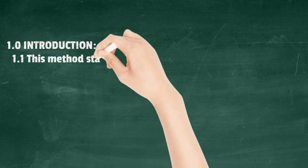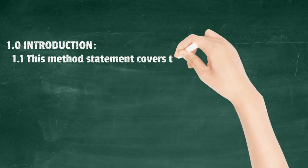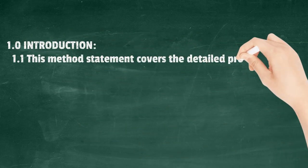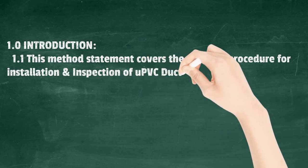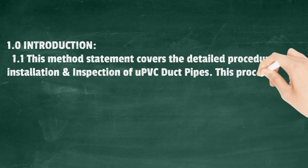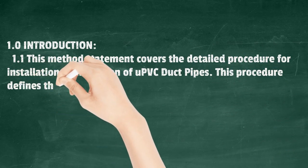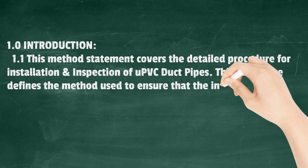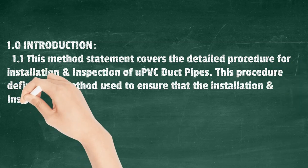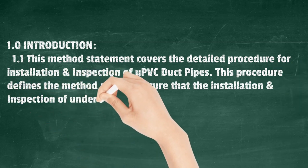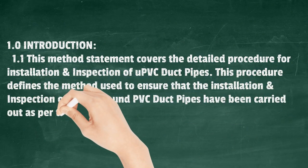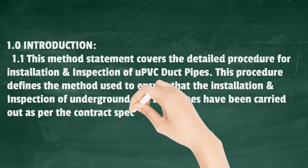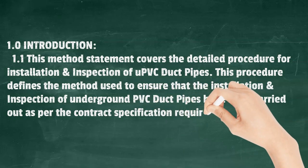Introduction: This method statement covers the detailed procedure for installation and inspection of UPVC duct pipes. This procedure defines the method used to ensure that the installation and inspection of underground PVC duct pipes have been carried out as per the contract specification requirements.